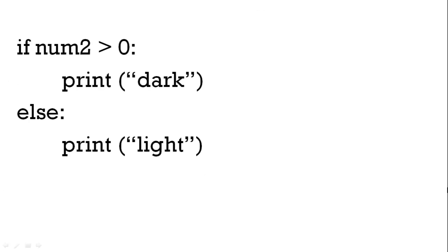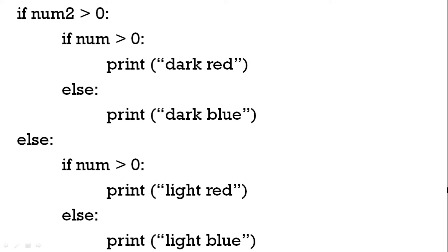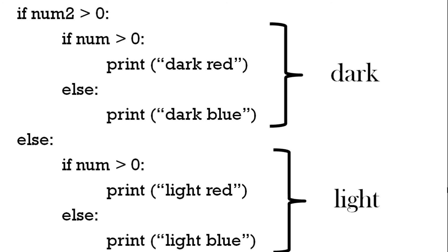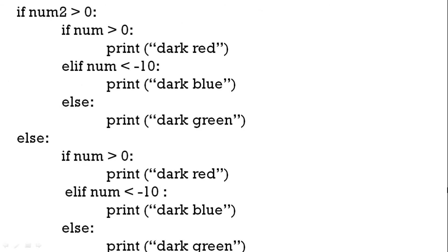For part three we put the second statement inside the first: if number is greater than zero print red, else print blue — but now we add dark. If num two is greater than zero it's dark red or dark blue, else light red or light blue. So we can see the nested if-else: top is dark, bottom is light. For part four we add an else part — inside the nested section: if num greater than zero print dark red, elif print dark blue, else print dark green — giving all six color options.